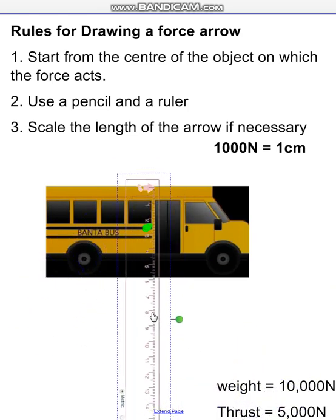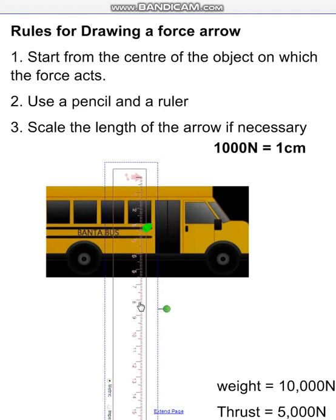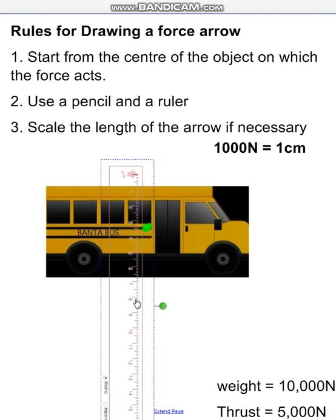The longer a force arrow is, the greater the force is. Sometimes you don't need to be quantitative, you don't need to use numbers, and sometimes you do. In this example we have a quantitative case and we're given a scale up here. A thousand newtons is equal to one centimetre length of the arrow. So I've got to draw and represent on a diagram a weight using a force arrow of ten thousand newtons.